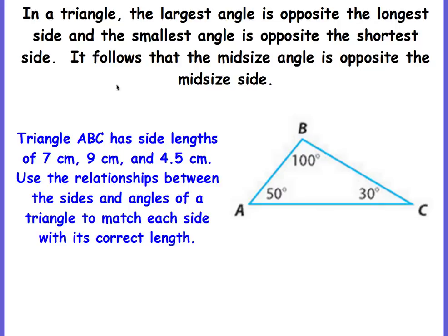In a triangle, the largest angle is opposite the longest side and the smallest angle is opposite the shortest side. It follows that the mid-size angle is opposite the mid-size side. The large angle is opposite the largest side, the smallest angle is opposite the smallest side, and the middle angle is opposite the middle side.